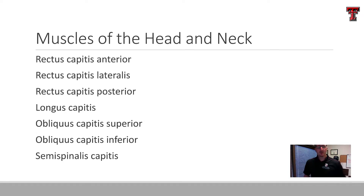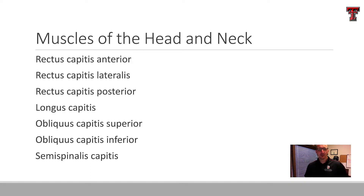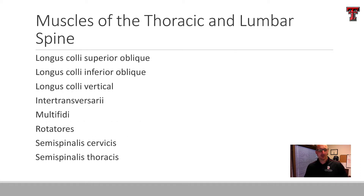We're going to look at these in groups. So the rectus capitis group we'll look at initially, along with the longus capitis muscle and the obliquus capitis, all grouped together right at the head — at the atlas and the axis. Then making our way down the cervical spine, looking at the semispinalis capitis, the longus colli group, the intertransversarii — deep muscles all the way down the spine — along with the rotatores and semispinalis muscles.